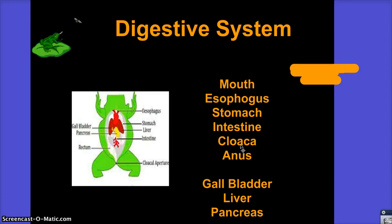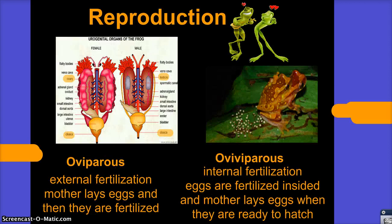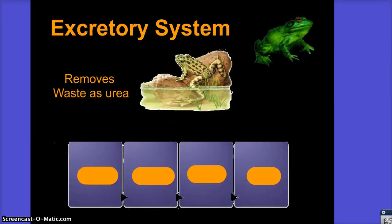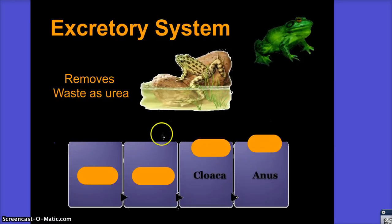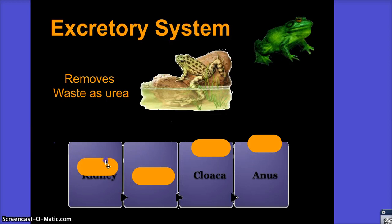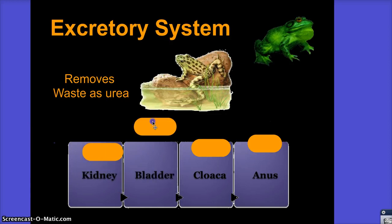So the cloaca for a frog is responsible for reproduction, digestion, and excretion too. You want to keep in mind that that's a major structure for most of the amphibians' systems, but you have to know the major organs with each.